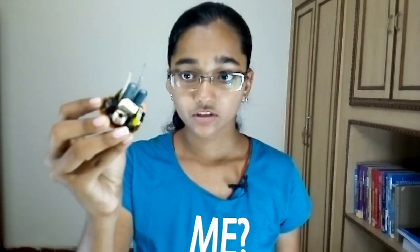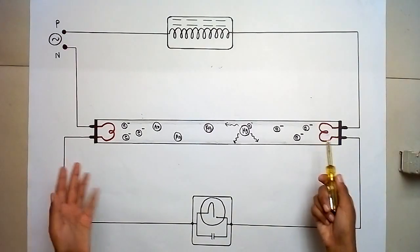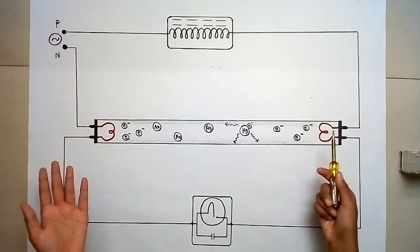I do not have an electronic ballast right now, but I have these — electronic ballasts which I have taken from compact fluorescent lamps. So this is the circuit diagram of a fluorescent lamp.